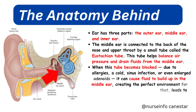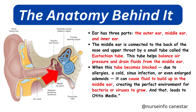To understand otitis media, let's quickly talk about the anatomy of the ear. Your ear has three parts: the outer ear, middle ear, and inner ear. The middle ear is connected to the back of the nose and upper throat by a small tube called the eustachian tube. This tube helps balance air pressure and drain fluids from the middle ear. When this tube becomes blocked — due to allergies, a cold, sinus infection, or enlarged adenoids — fluid builds up in the middle ear, creating the perfect environment for bacteria or viruses to grow. And that leads to otitis media.